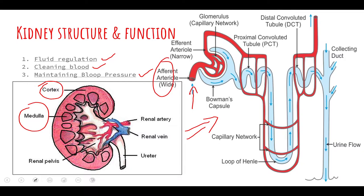This afferent arteriole folds upon itself and forms the glomerulus. As the blood passes through the glomerulus, it creates high pressure because it's coming from a wider afferent artery to a smaller afferent arteriole — whenever you have fluid going from a bigger tube to a smaller tube, you're generating high pressure. This pressure enables us to transport fluid and electrolytes across a semi-permeable membrane into the Bowman's capsule. As the fluid goes through the Bowman's capsule and through the proximal tubule, reabsorption of water and electrolytes takes place. Important electrolytes such as calcium, sodium, and potassium get reabsorbed in the proximal tubule.